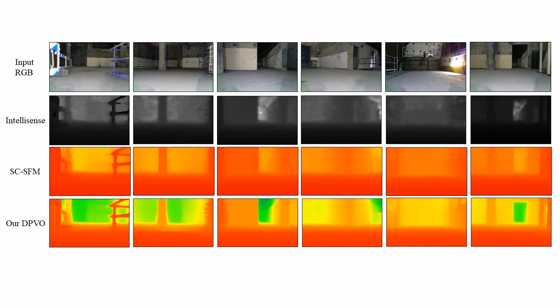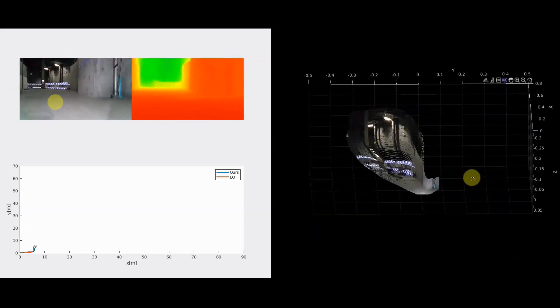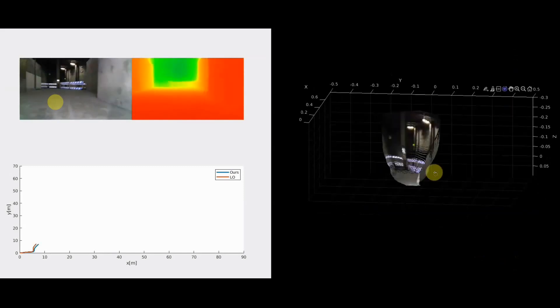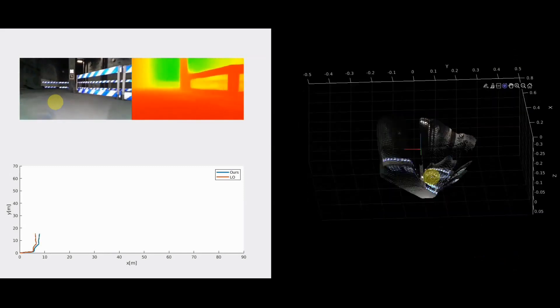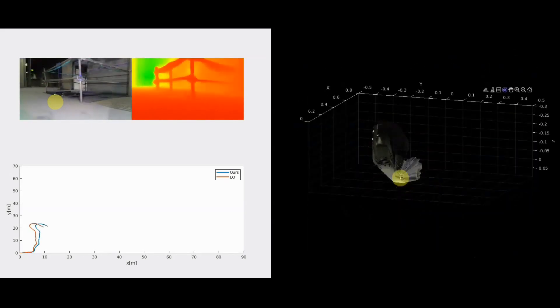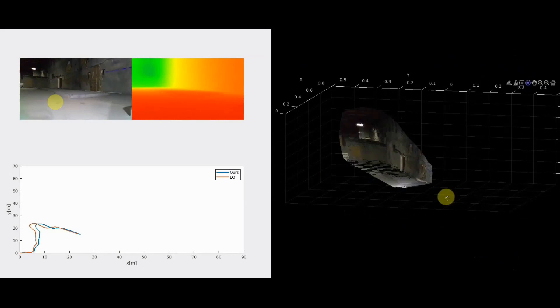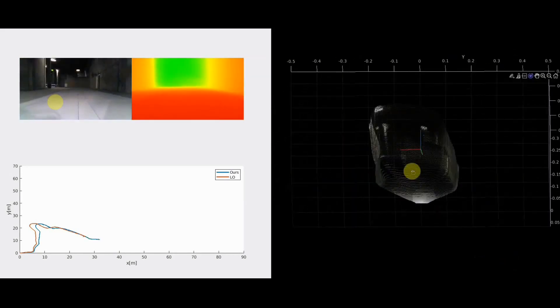Here we show sample depth reconstruction results for the subterranean dataset recorded by the CoSTAR team in the DARPA competition, during autonomous exploration of an underground environment at the sets of nuclear plant ELMA, Washington. In this video, the top left corner shows the input RGB image and the predicted depth map on the bottom left corner, aligned visual odometry estimation of DPVO on the right hand side, and we show the estimated depth in a 3D point cloud.